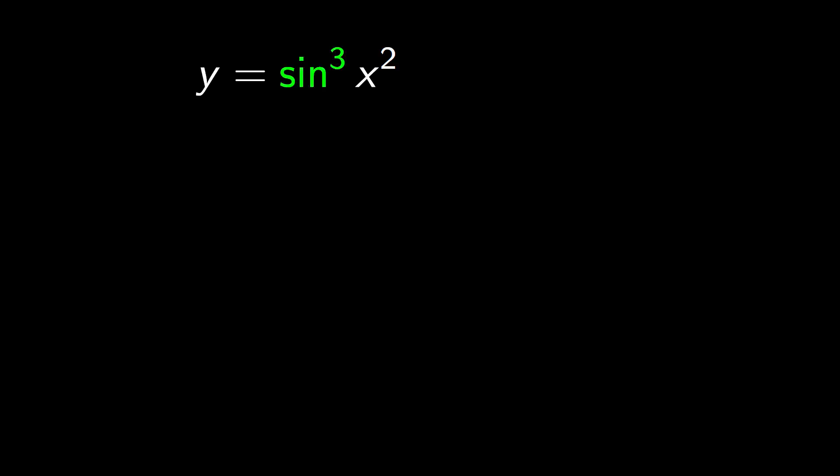Whenever we have a sine raised to a number, and this also happens with cosines, logarithms, etc., in this case we have sine cubed, the exponent 3 affects the entire sine. So this is the sine of x squared, all cubed.